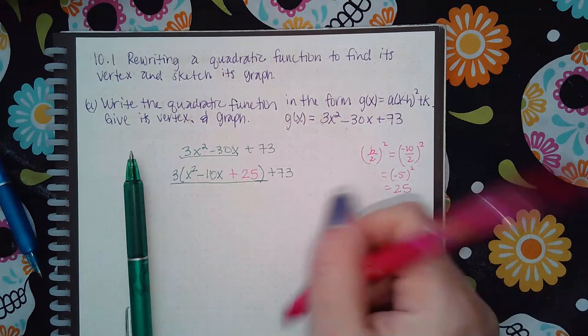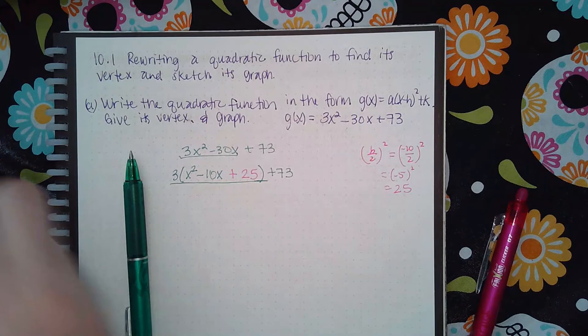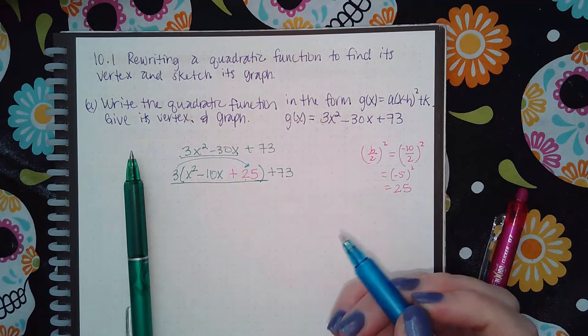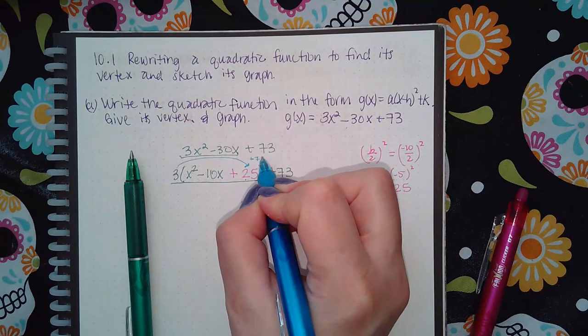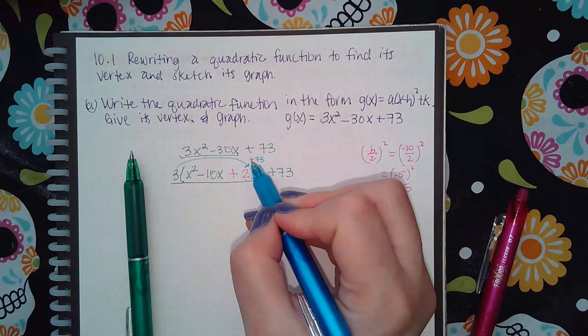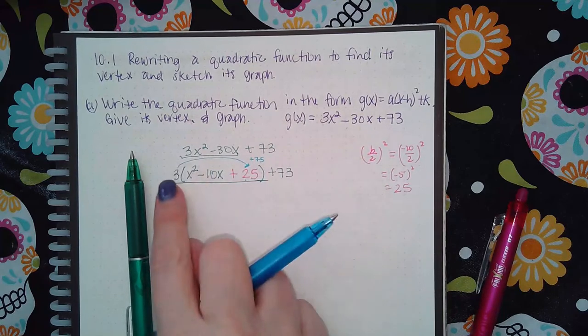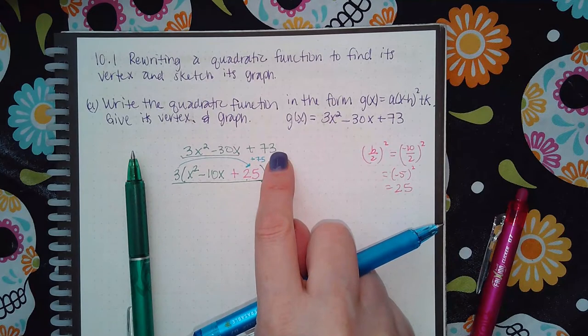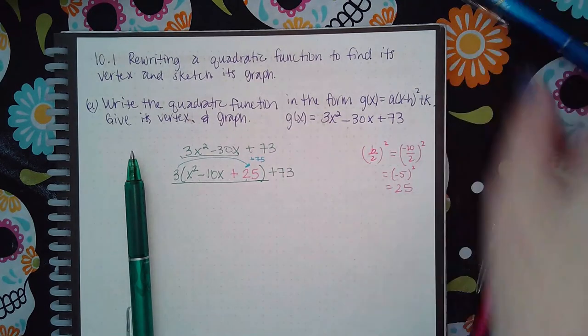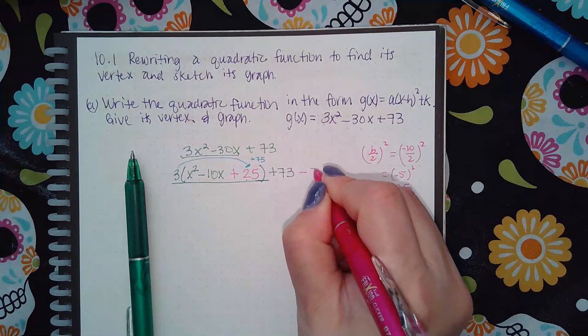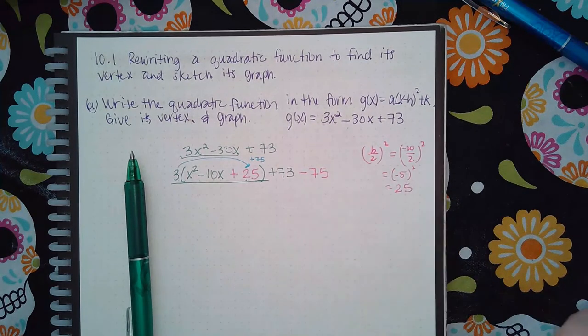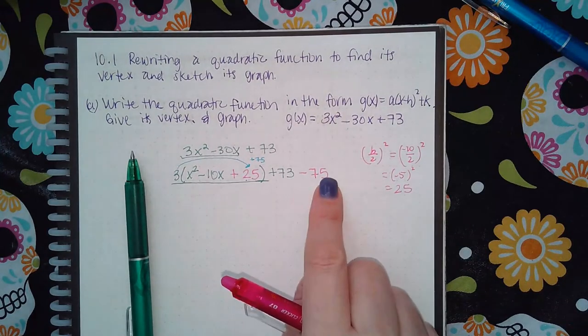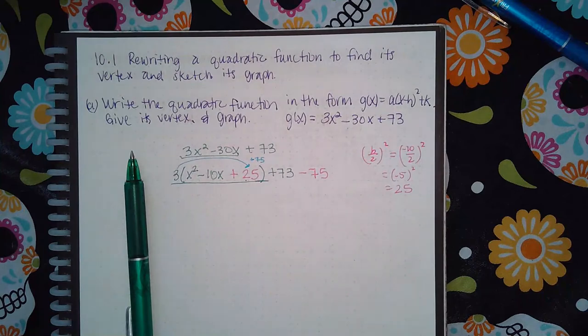But that's actually not a 25, that's actually 3 times 25, which means it's actually adding a 75. So if I'm going to add 75 over here, in order to keep this expression equivalent to the previous expression, I need to undo what I just did. In order for me to undo that, I'm going to have the minus 75. If I'm adding 75 and subtracting 75, it's like I'm really doing nothing to the original expression.